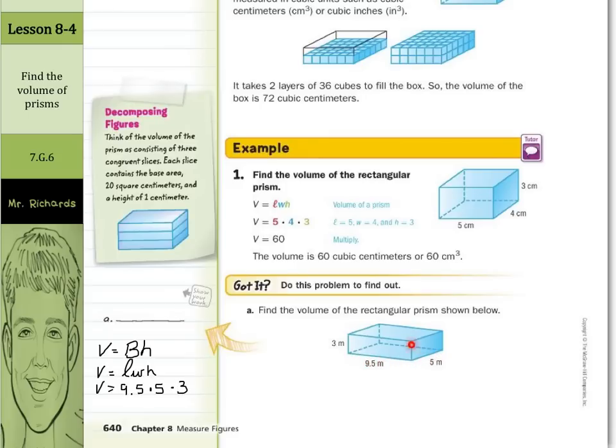And when we multiply these numbers together, we get 142.5 meters cubed. And that's my solution: 142.5 meters to the third power, cubic meters, or meters to the third.